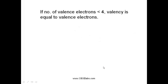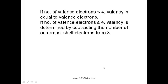To find out the valency of silicon, we have two particular cases. The first one is, if the number of valence electrons are less than 4, then the valency is equivalent to the number of valence electrons. The second case is, if the number of valence electrons are greater than or equal to 4, then valency can be determined by subtracting the number of outermost shell electrons from 8.